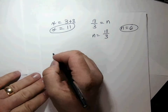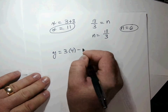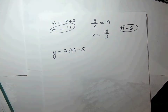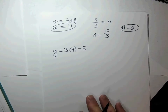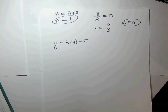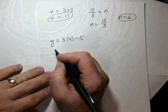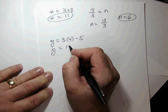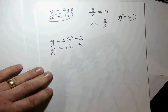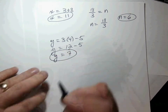Part C: y equals 3 times 4 minus 5. We have to remember our order of operations rules. First I must multiply to get 12, then subtract 5, and I get y equals 7.